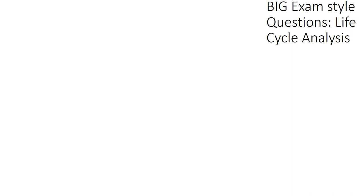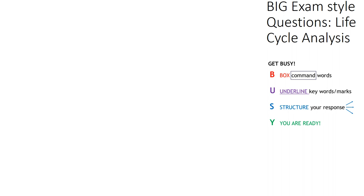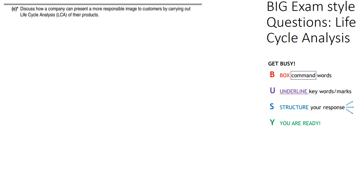Now let's move on to the exam question — one of the big exam-style questions we get at the end. Use the GET BUSY method: box your command words, underline, structure your response. The question is: 'Discuss how a company can present a more responsible image to customers by carrying out a life cycle analysis of their products.' This is worth six marks.